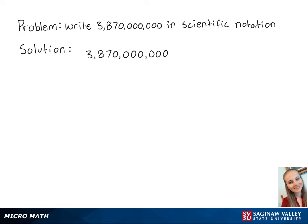For this problem, we want to write this large number in scientific notation. When we write a large number in scientific notation, we want to move the decimal so that it is after the leftmost non-zero number, which is 3.